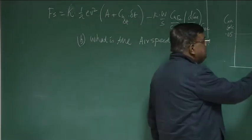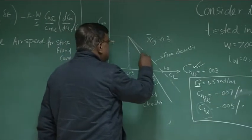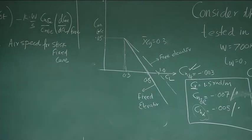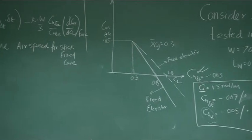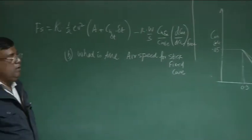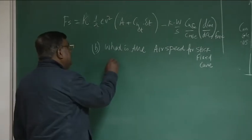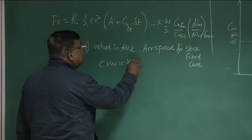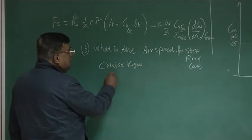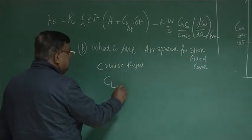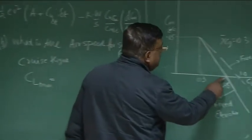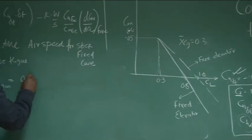That means I have to see this graph. These are all graphs of CM versus CL for a cruise flight. Trim is at CL equal to 0.8. First identified, it is a cruise flight and CL trim is given by, for a stick fixed case, it is trimming at 0.8 CL, CL equal to 0.8.